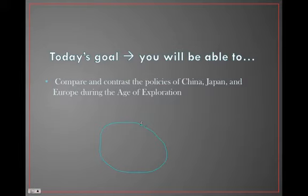One good way to compare and contrast is a Venn diagram. What did Europe, what did China, Japan do — what did they do differently, what did they do similarly?